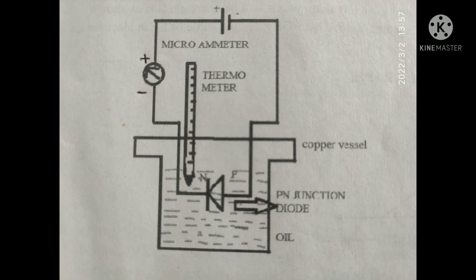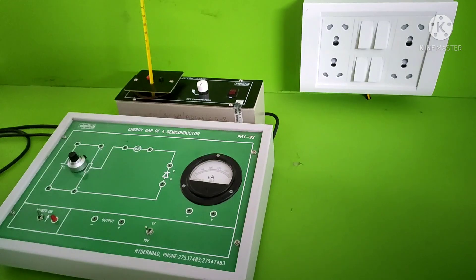This is the circuit diagram used for the connection. The battery positive is connected to the n-side, and battery negative is connected to the p-side via the ammeter. The ammeter positive is connected to the battery positive, and the ammeter negative is connected to the n-terminal of the p-n junction. The p-n junction is immersed in the liquid.